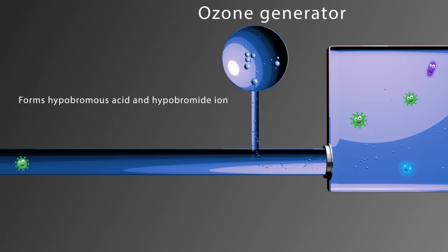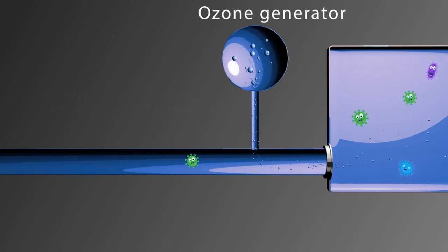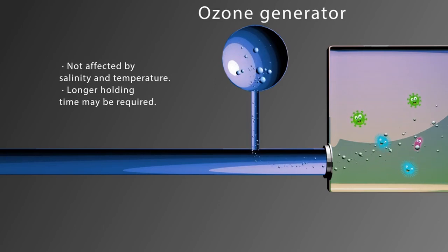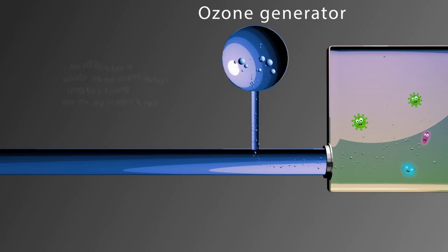These are effective disinfectants. Where ships take on fresh water as ballast, for example ports located in lakes or rivers, brominated compounds are not formed and the ozone alone acts as disinfectant. Waters with high particulate and organic matter require higher doses of ozone to ensure sufficient disinfection. Salinity and temperature are not obvious factors affecting the efficiency of ballast water treatment systems employing ozonation. However, longer holding time may be required. Both ozone and hypobromous acid disintegrate extremely rapidly. Ozone disintegrates significantly slower in fresh water than in seawater.